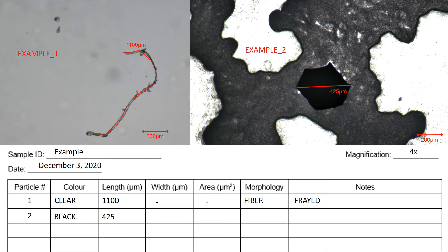And then you can measure. And the length is 425 microns. The width is 400 microns. And then the area is 104,000 microns squared. And then write in the morphology, which is a fragment.